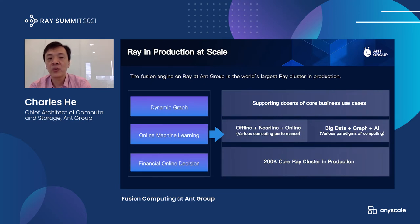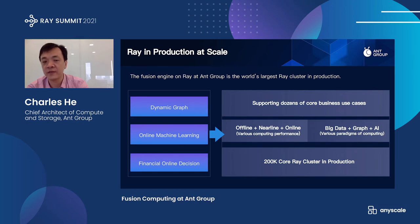Since last year, we have been pushing this effort into production at scale. We are supporting dozens of core businesses inside the company, including payment, credit, online promotion, and other services. For computing paradigms, we do offline computing and near-real-time plus online computing, including big data applications, graph, and AI-related work. The whole cluster is now about 200,000 CPU cores in production and we are rapidly expanding. I think it's probably the largest Ray cluster in the world in production so far.